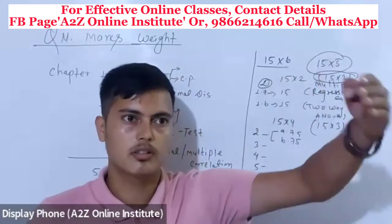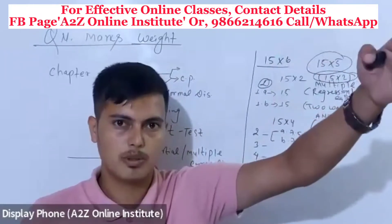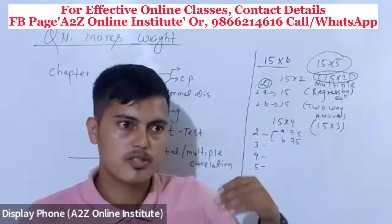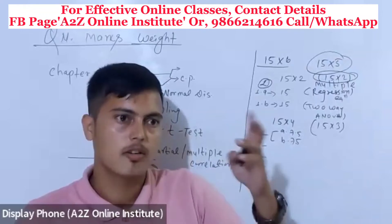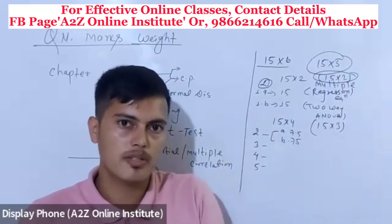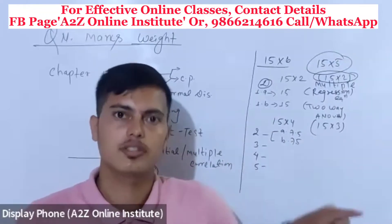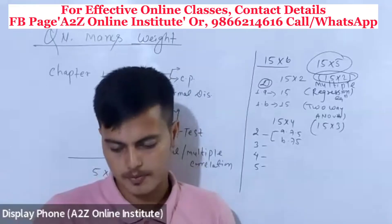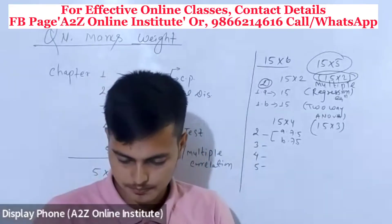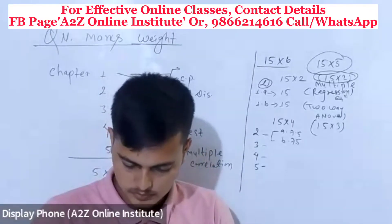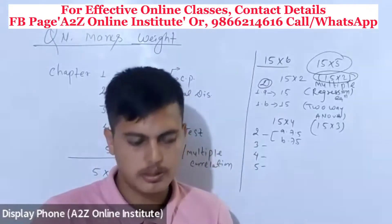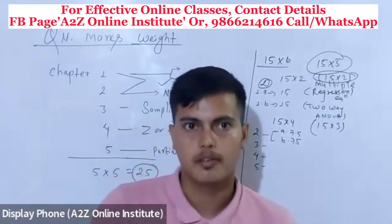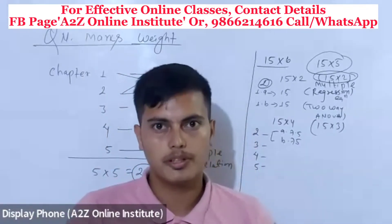The last 10% is the richest 10%, the poorest 10%, and the middle 20% is the question. The question is the same.